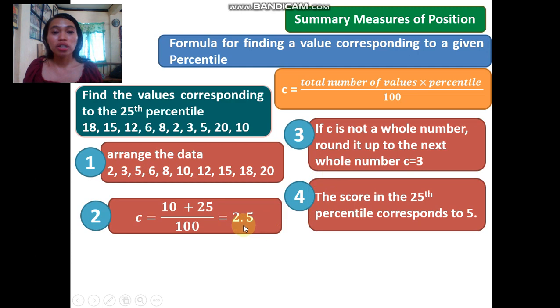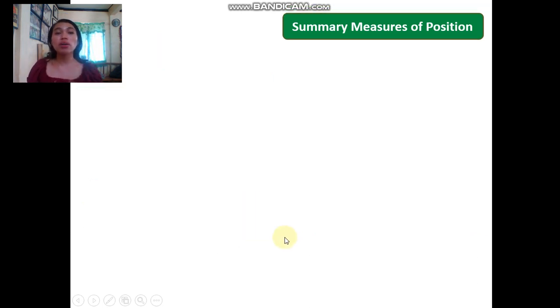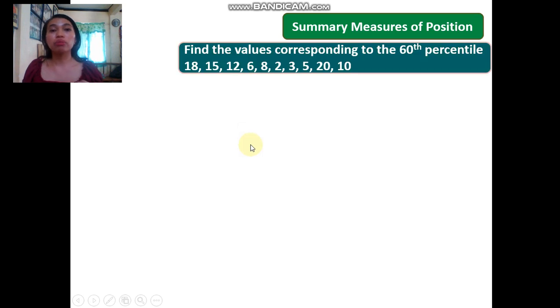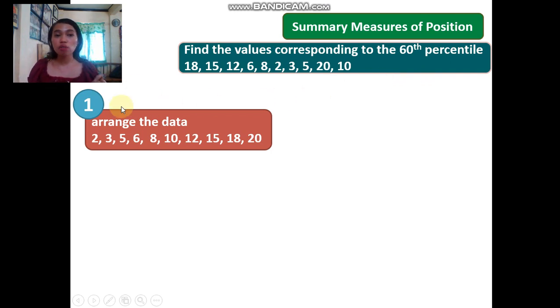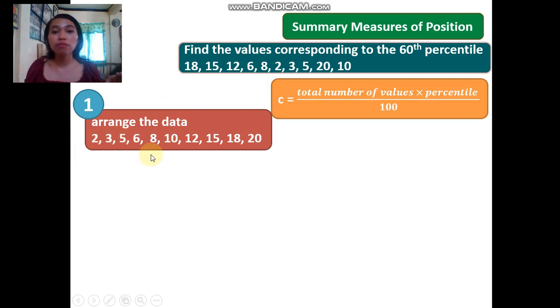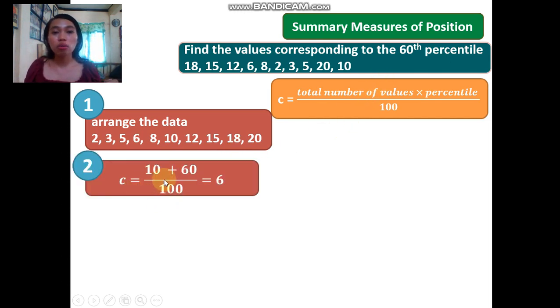Now what if C is already a whole number? Let's look at our next example. Find the value corresponding to the 60th percentile. First, arrange the data. Then use the same formula: C equals (10 times 60) divided by 100, which equals 6.